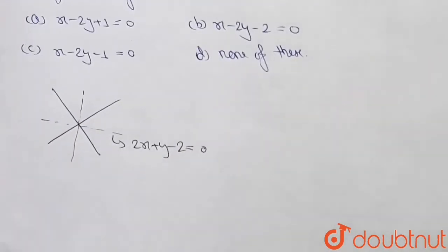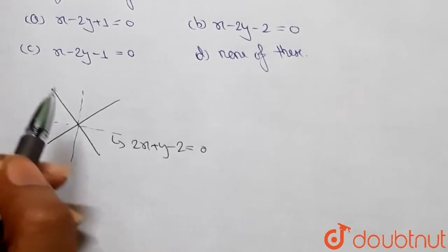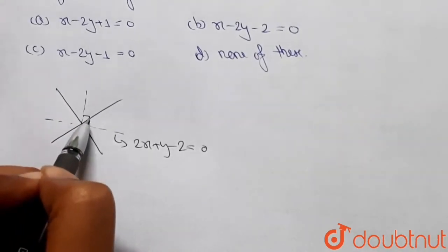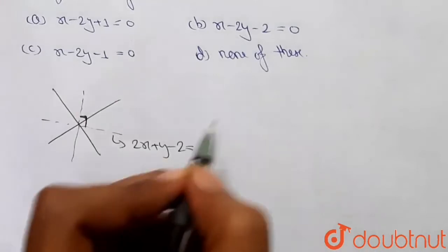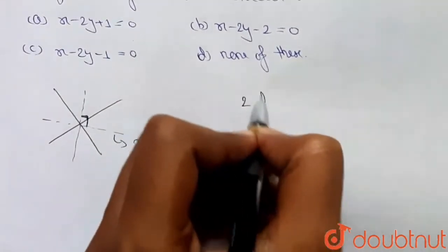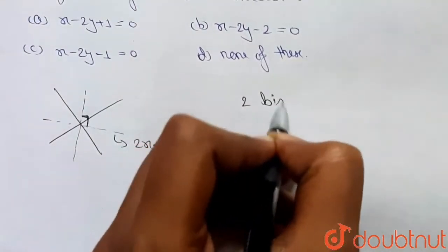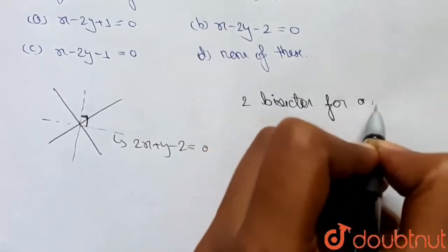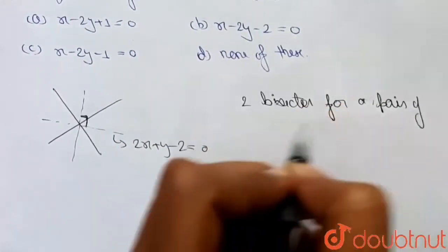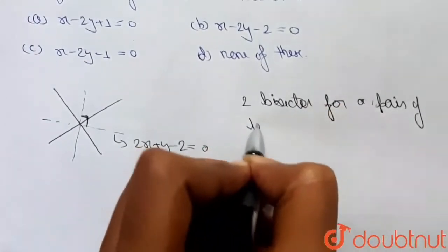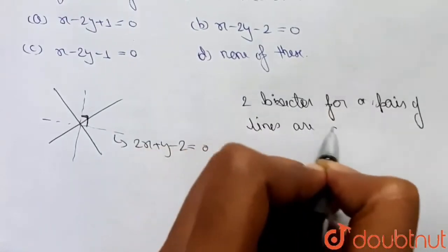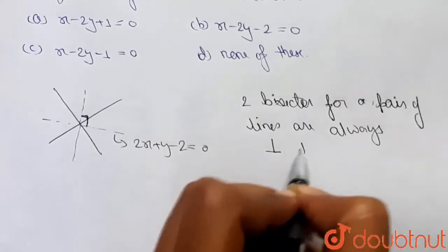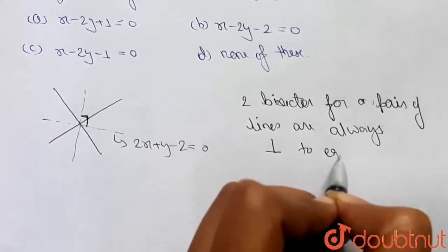Whenever we have two angle bisectors for a pair of lines, those two bisectors are always perpendicular to each other.